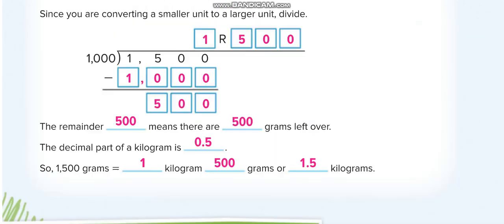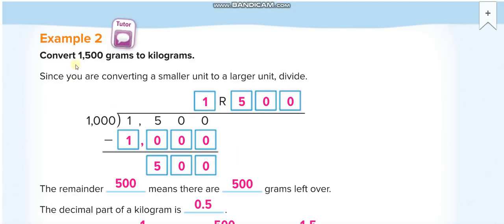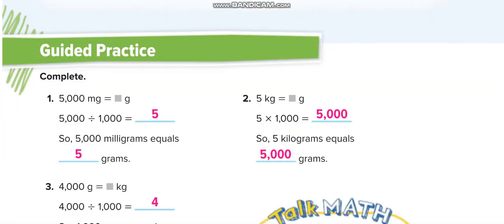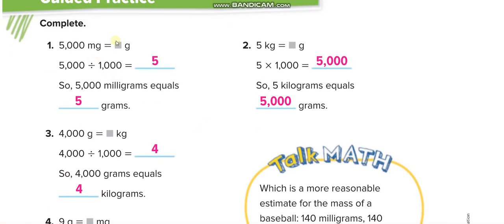Next: convert 1,500 grams to kilograms. We are converting from a smaller unit to a larger one, so we divide by 1000. 1500 divided by 1000 gives 1 with a remainder of 500. You can think of it as: 1000 grams is 1 kilogram, and 500 grams is half a kilogram, so the answer is 1.5 kilograms.